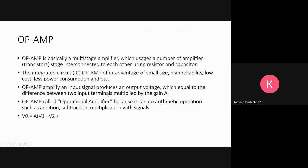The output is equal to the difference between two input terminals multiplied by the voltage gain. You can see that VO equals A times (V1 minus V2). Op-amp is called operational amplifier because it can do addition, subtraction, and multiplication with signals.